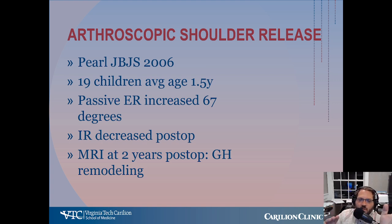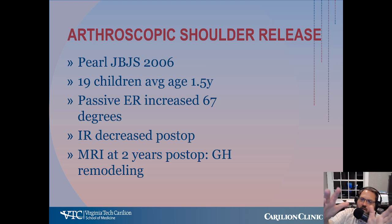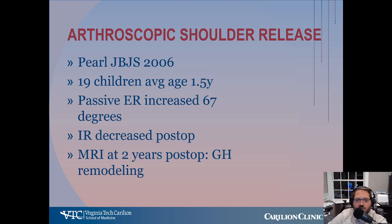The glenodysplasia occurs because of the Huter-Volkman principle, where with increased pressure on one side of the growing physis there's less development of the cartilage, and where the pressure's been taken off, there's more development. So as the shoulder is internally rotated and subluxed posteriorly, the posterior glenoid doesn't develop, and the anterior glenoid overdevelops. But by rebalancing that, the glenohumeral dysplasia can improve.